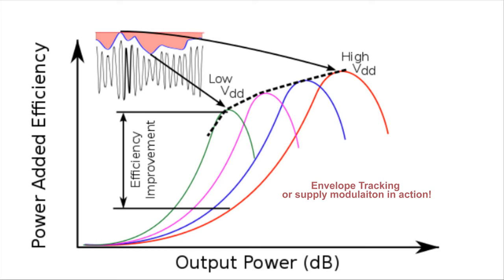This is very different compared to the case when we have a single supply. In the single supply, as we saw earlier, when we go at the back-off level, when the output power is low, the efficiency degrades considerably. So this is the fundamental principle of envelope tracking, also known as supply modulation.